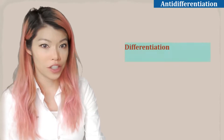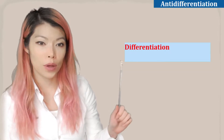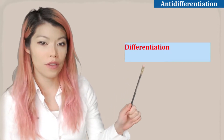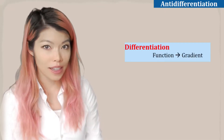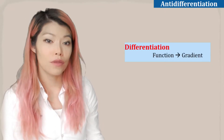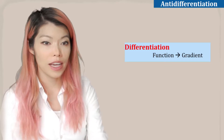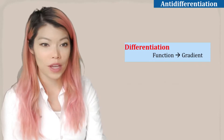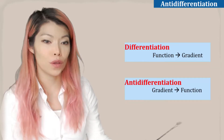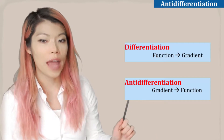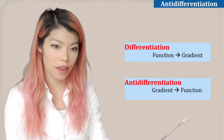Previously we had a look at differentiation, which is the process of having a function and then finding its gradient. The reverse of that is called anti-differentiation, and it is when you have a gradient and you're looking for its function. So once you anti-differentiate a gradient, you obtain the function.